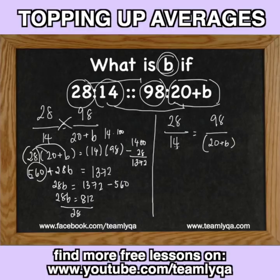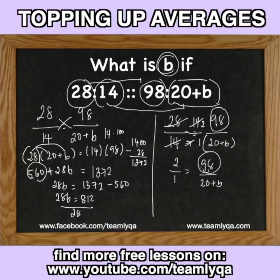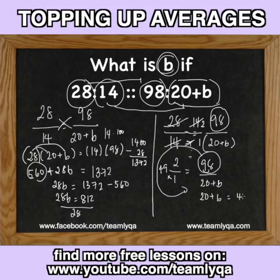I'll reduce it to lowest terms first. It's divisible by 2, so it becomes 14 over 7, which in turn is just 2 over 1 since it's also divisible by 7. I reduce it to lowest terms, then I rotate it. So, 2 over 1 is equal to 98 over 20 plus B. I'll start with this end since that's the missing part. 98 divided by 2 gives me 49, times 1 — so that would be 49. That means 20 plus B must equal 49.